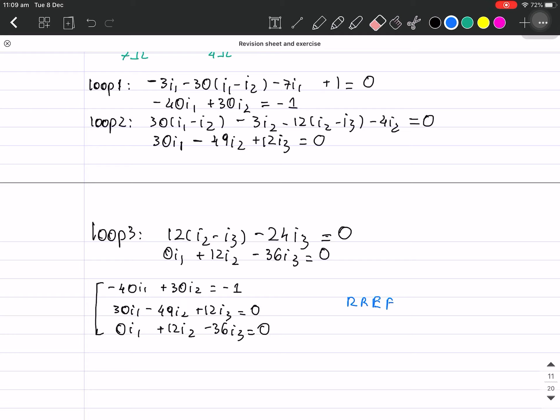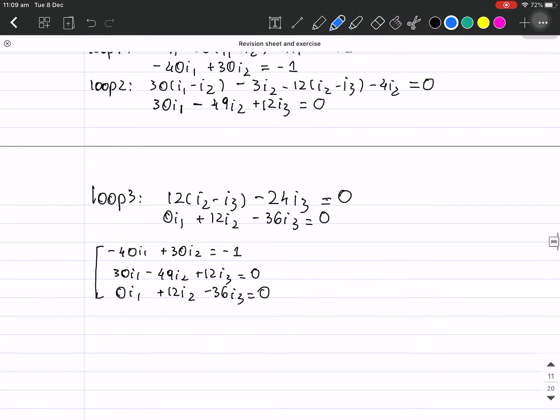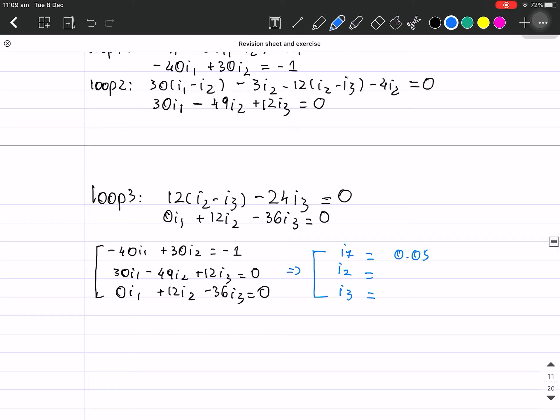It's going to be much more easy, and the values I get for i1, i2, and i3 are 0.05 amps, 0.033 amps, and finally 0.011 amps.